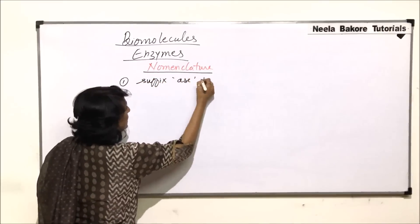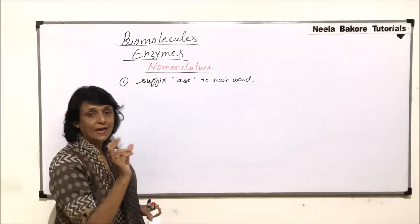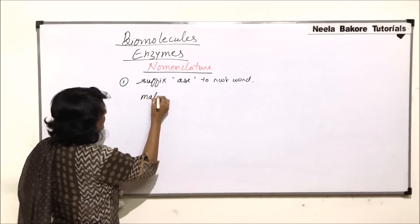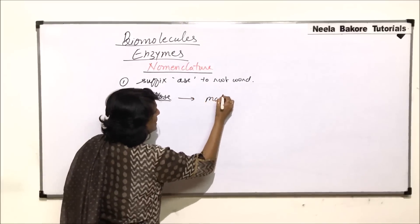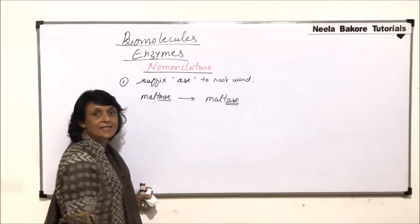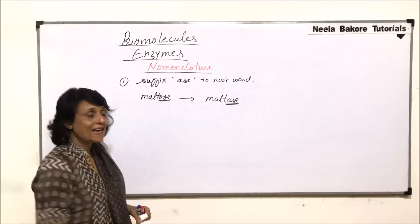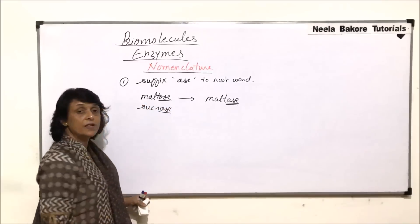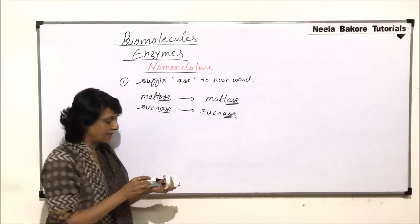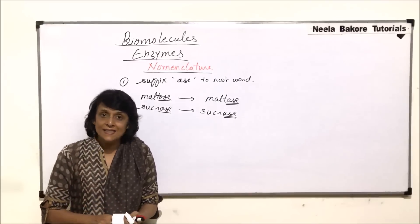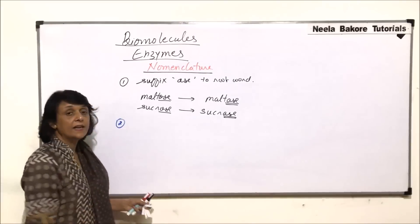We add the suffix '-ase' to the root word. For example, if the substrate is maltose, 'malt' becomes the root word. We remove '-ose', the root word remains 'malt', and we add '-ase' — so it becomes maltase. Similarly, for sucrose we remove '-ose' and add '-ase', so it becomes sucrase. As soon as '-ase' is added, that means the substance is an enzyme acting on that particular substrate. This was one old method and many times we still follow it.